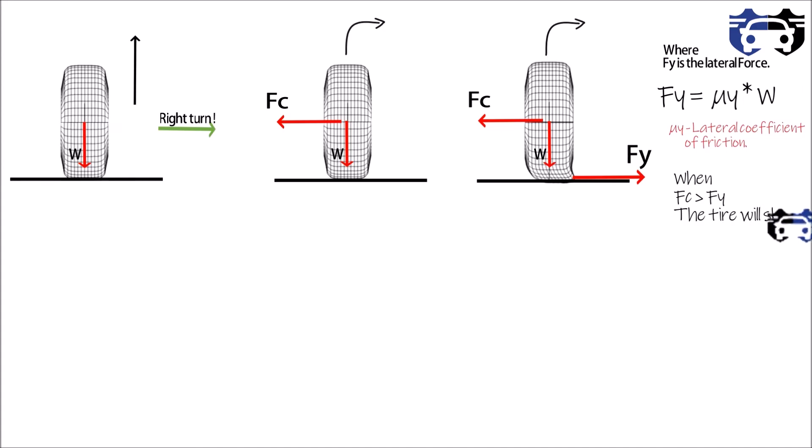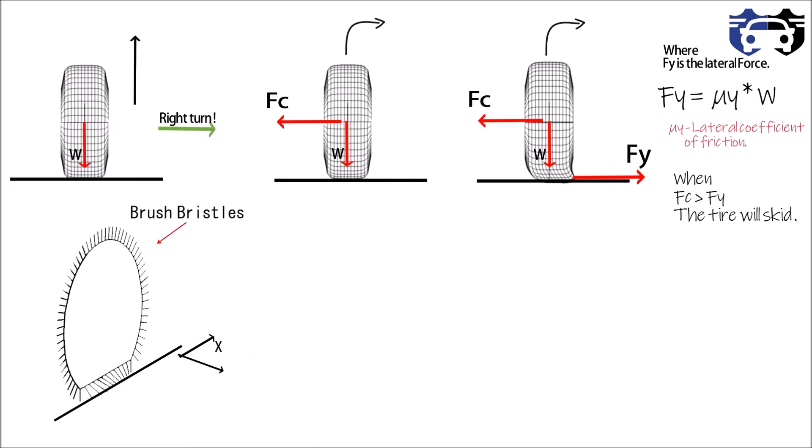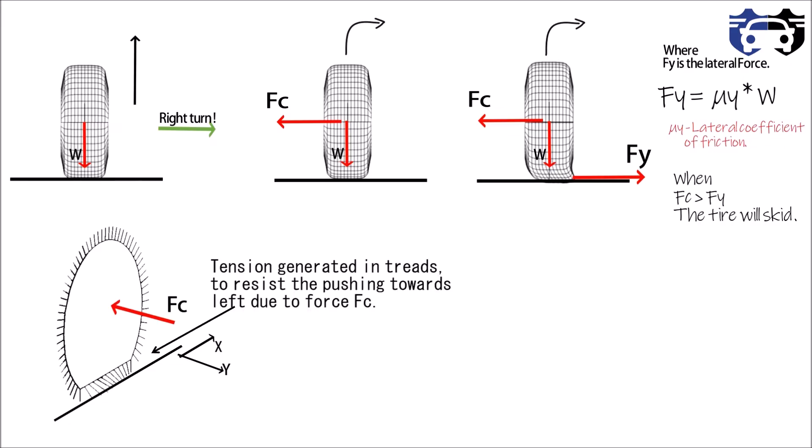Now let's see this case at the micro level. The treads here are shown by the brush bristles. Now as the tire is pushed towards the left direction due to the force Fc, the treads will resist this force and will generate a tension in them. This tension or the resisting force is the lateral force. So this is how the lateral force is generated.